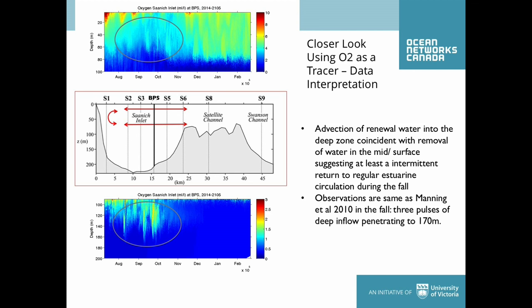Looking at the summer months, at the beginning we have the same sort of periods of strongly oxygenated water coming in during spring tides. But as we head into the fall, we have these deep intrusions of oxygenated water that appear to reverse the whole circulation. My theory is that this comes in pushing surface waters out, giving us more of a regular estuary circulation — not forced by a river at the head, but actually by the intrusion. Again, that's speculative.